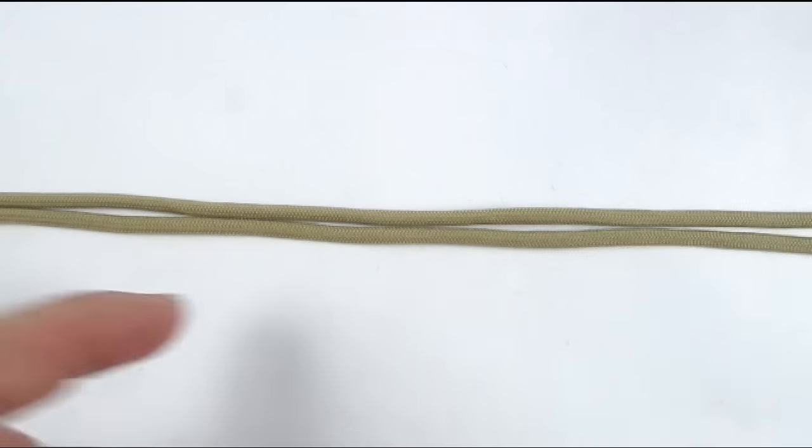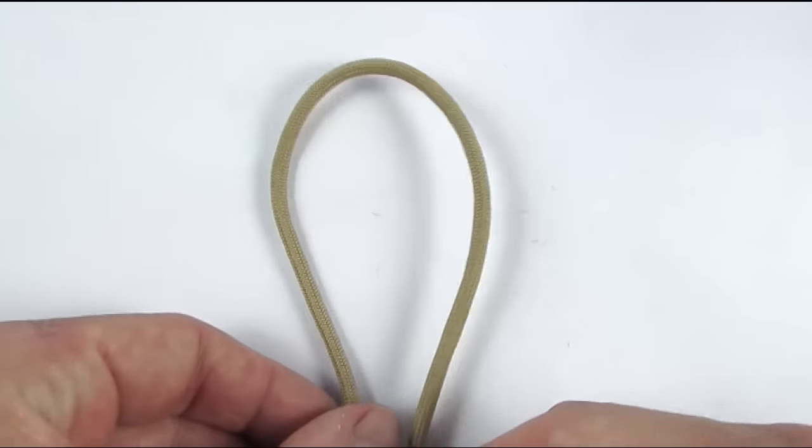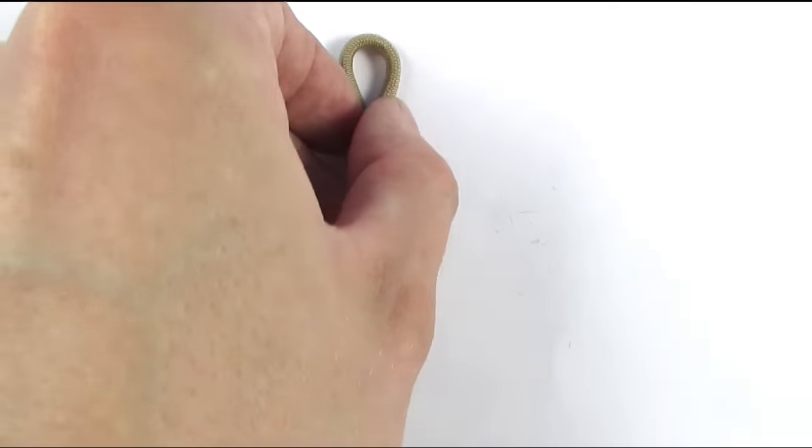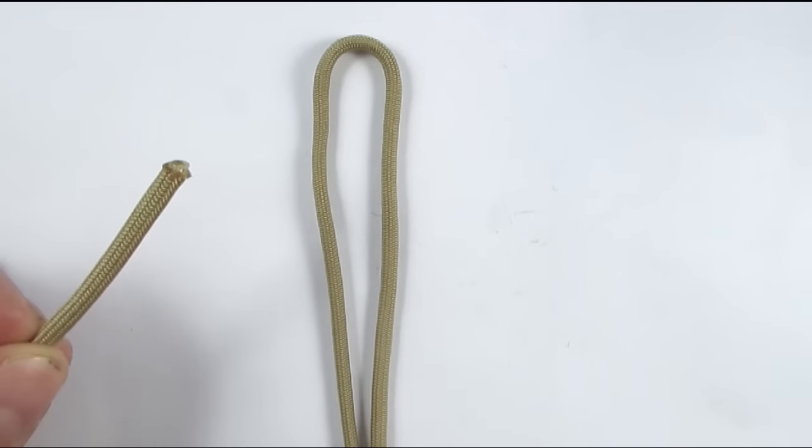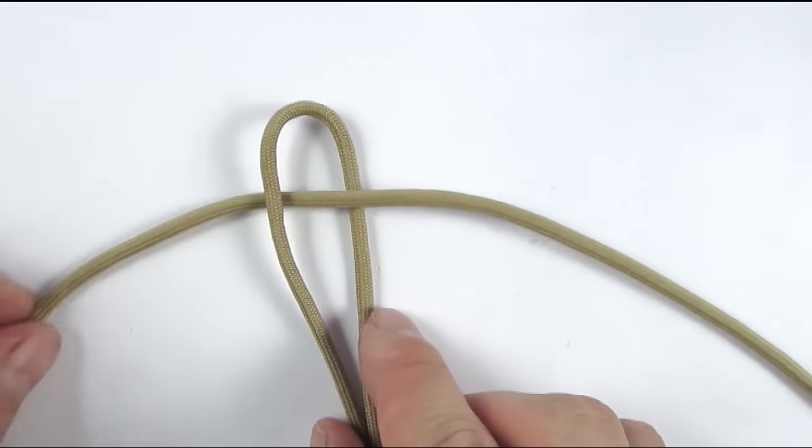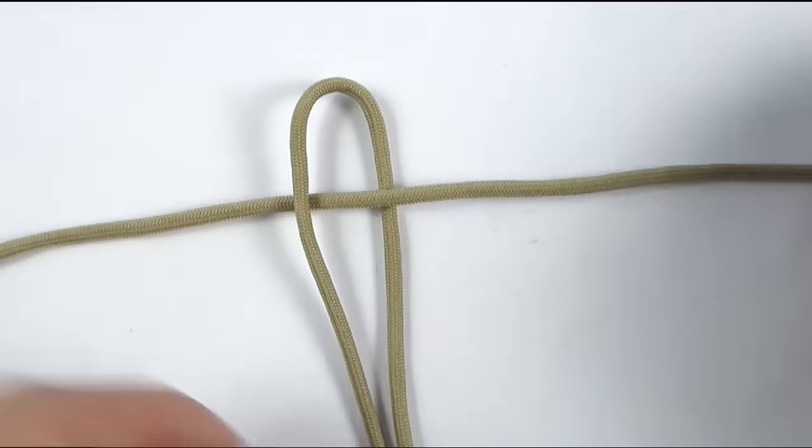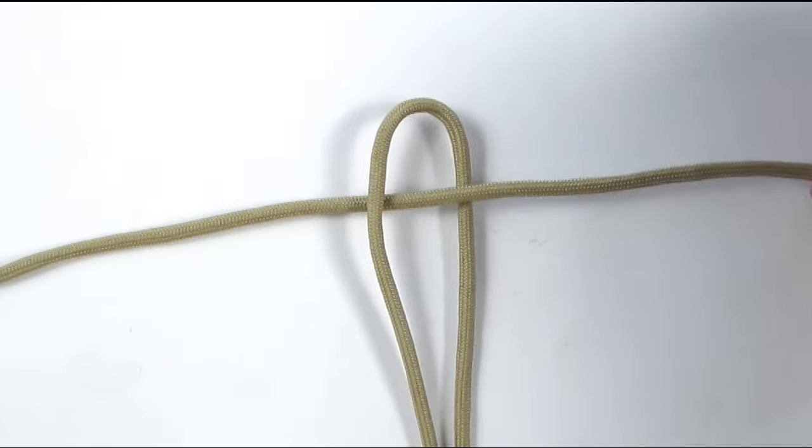So we're now going to make our bottom part, which is done exactly the same way, but without making the loop. So fold one of the cords in half. Then take your other cord and place it under over, like this. Then tie a cobra knot onto the right side.